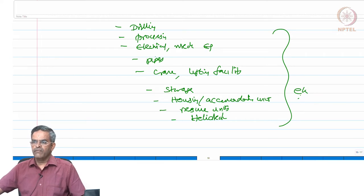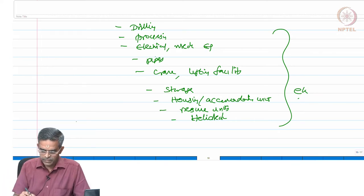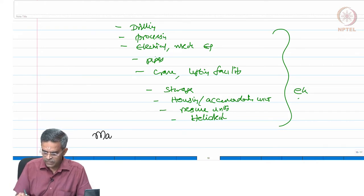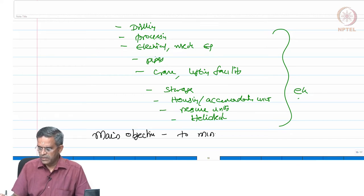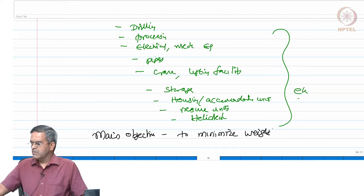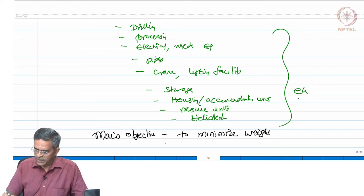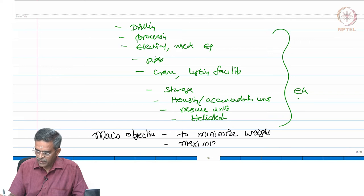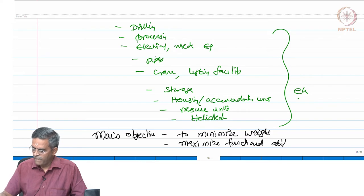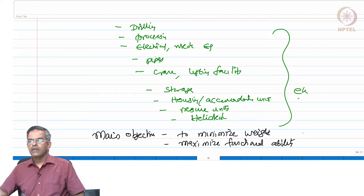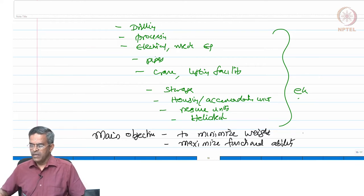We are looking at design from a much larger perspective. The main objective of the design therefore is to minimize weight and maximize its functional ability. The functional design of a top side or any strategic structure preludes the structural design.